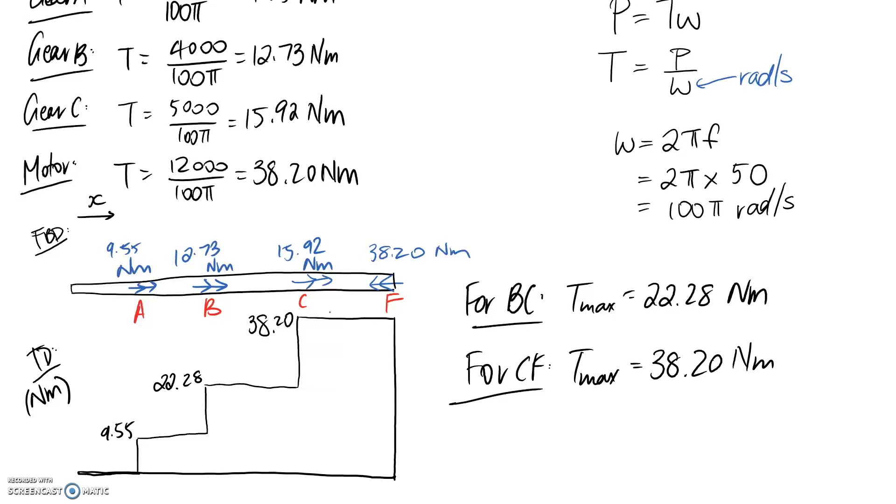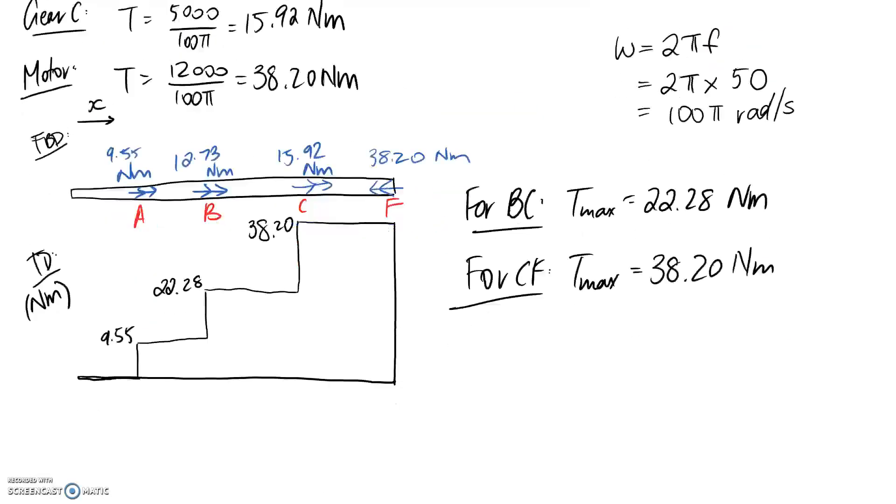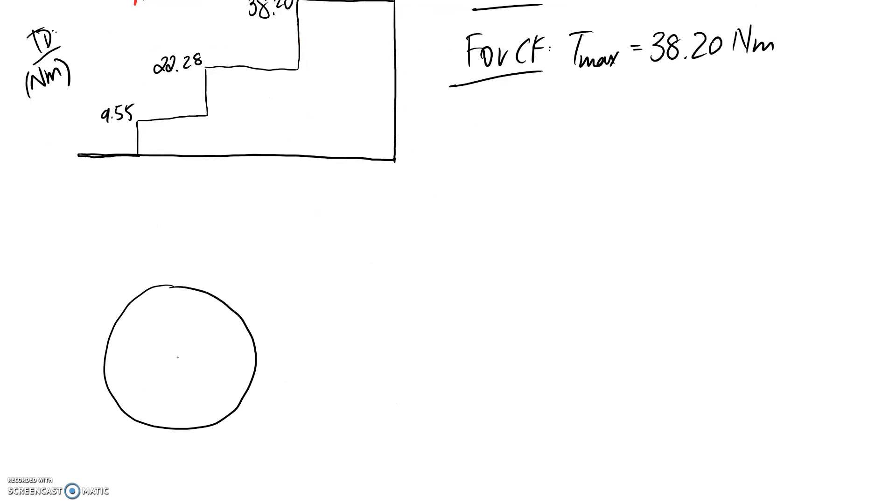Going back up to our equation, the next thing I'm going to look for is r max and J, and these are going to come from looking at the cross section. We're told we have a solid shaft with a diameter of 25 millimeters. Let me sketch that - a circle with diameter 25 millimeters. If I mark the centroid at the center of the circle, r max is the biggest distance we can get away from the centroid while still sitting on the cross section. The furthest distance we can get is at the outer surface, so r max is going to be half of 25, which is 12.5 millimeters.